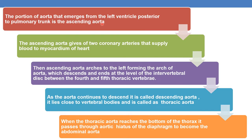The portion of the aorta that emerges from the left ventricle posterior to the pulmonary trunk is the ascending aorta. The ascending aorta gives off two coronary arteries that supply blood to the myocardium of the heart, and then the ascending aorta arches to the left, forming the arch of the aorta, which descends and ends at the level of the intervertebral disc between the fourth and fifth thoracic vertebrae.